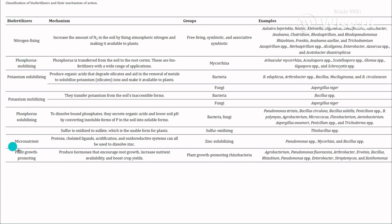Micronutrient biofertilizers involve gelation, acidification, and dissolving of zinc so that micronutrients are easily available to the plant. For example, zinc-solubilizing organisms include Pseudomonas species, Bacillus species, and mycorrhizae.